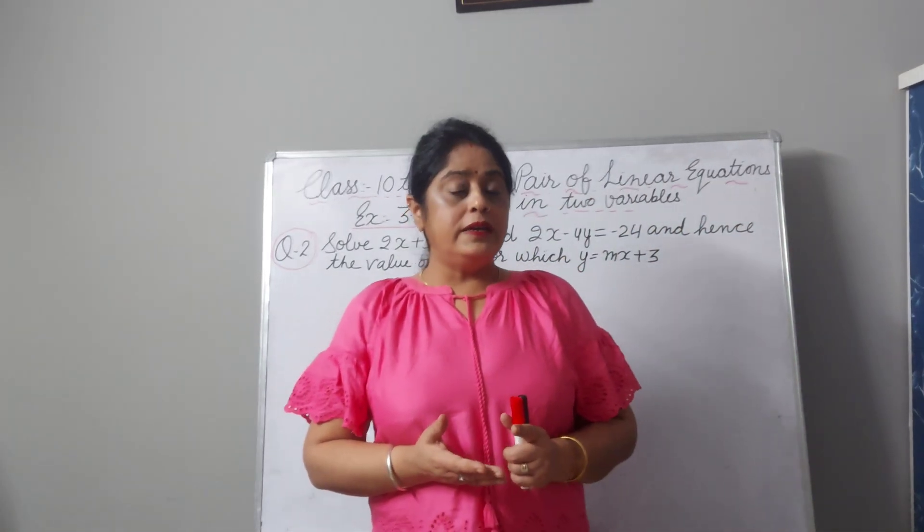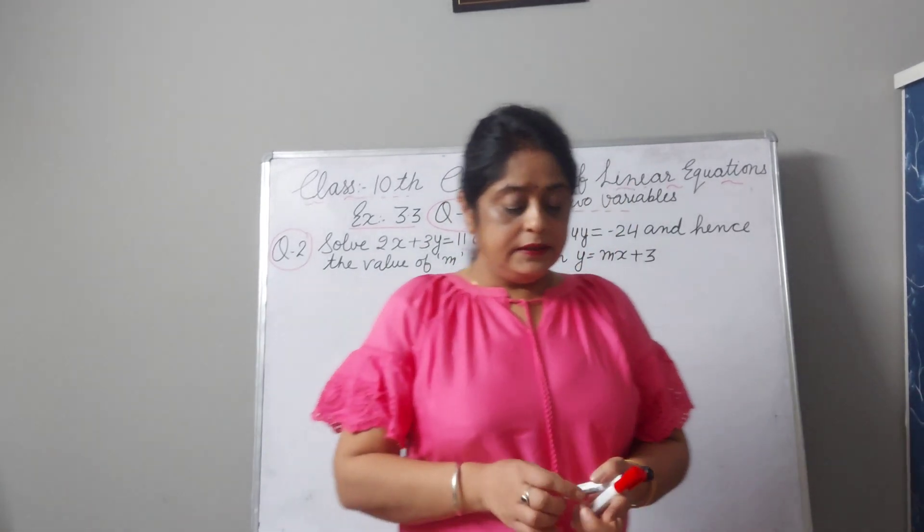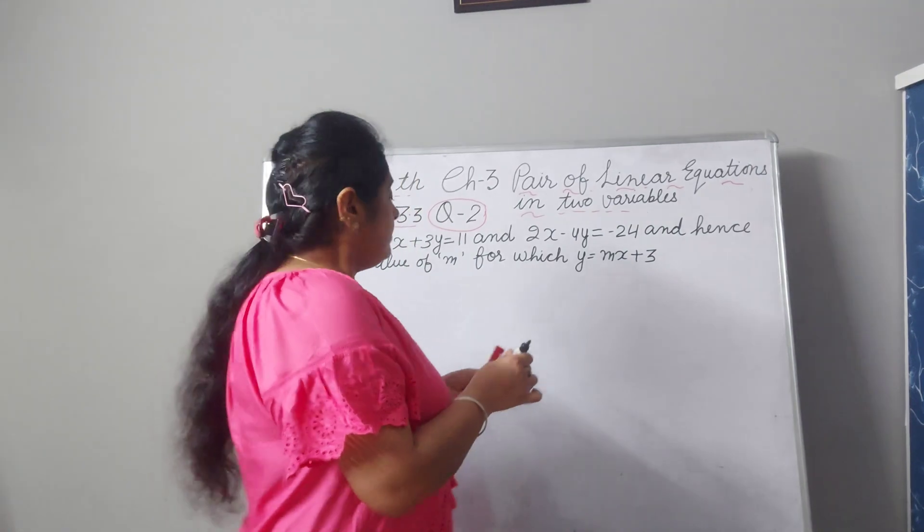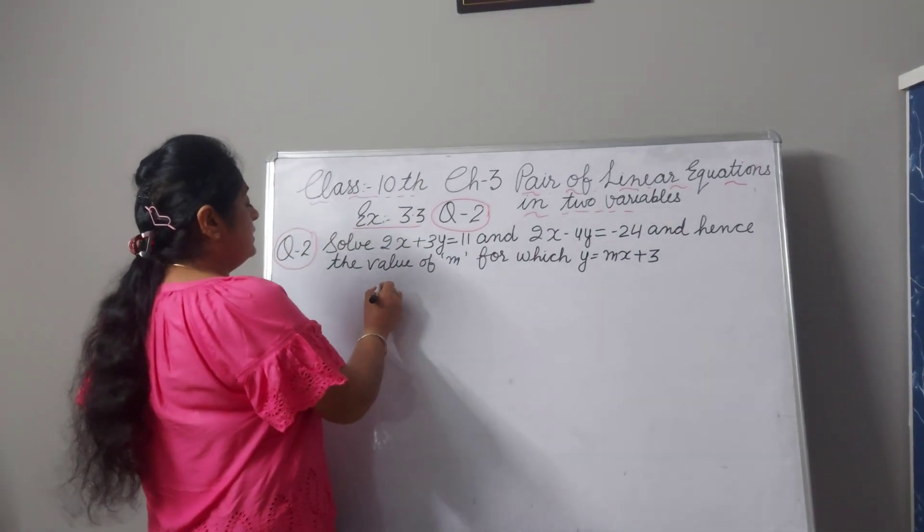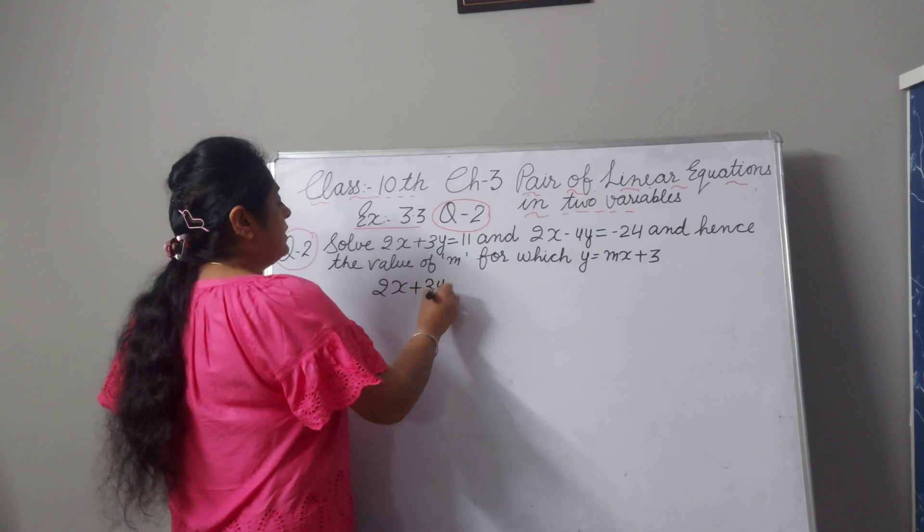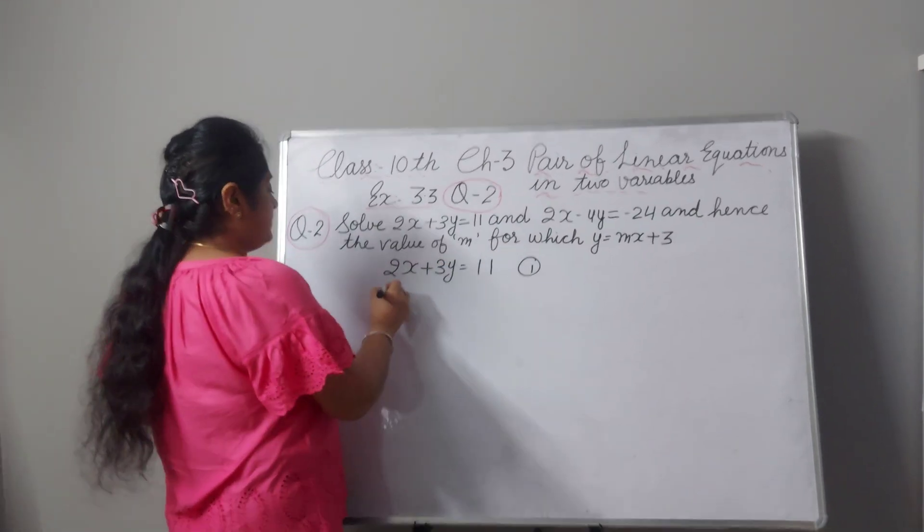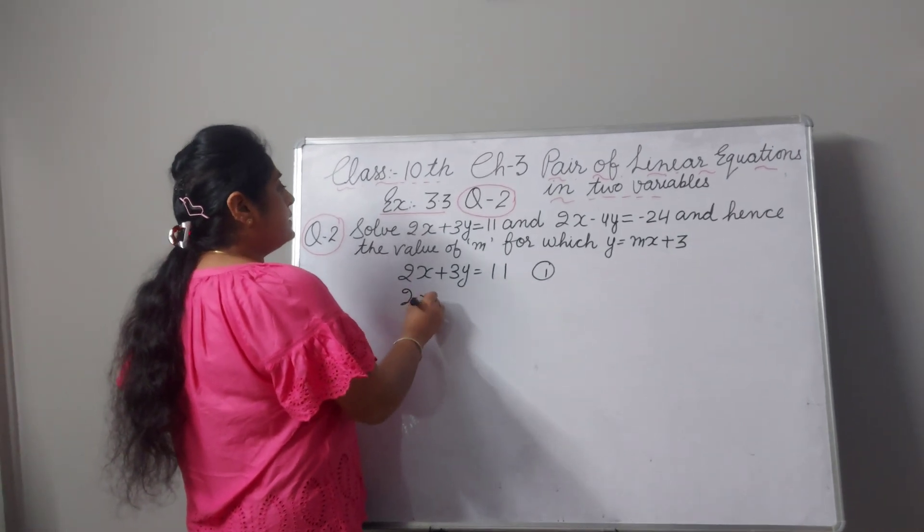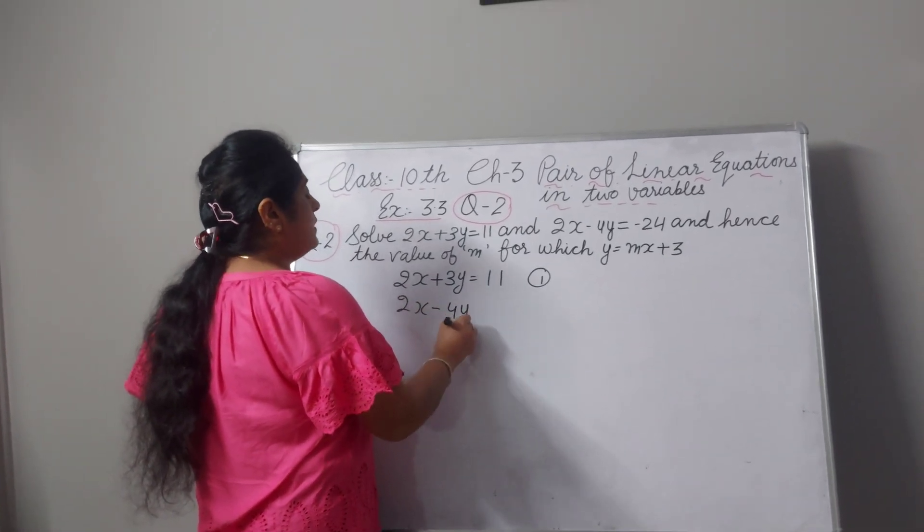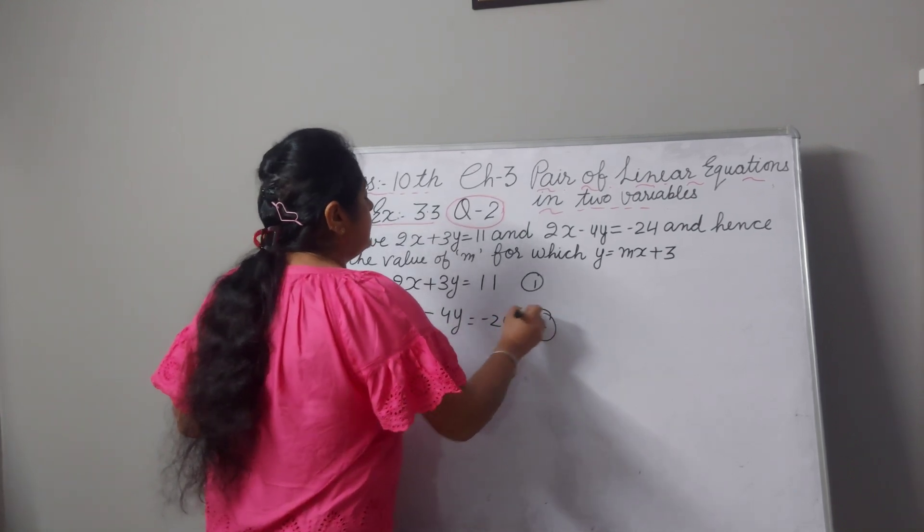First of all, we have to calculate the value of x and y, so now we can use substitute method. First equation is 2x plus 3y equal to 11. This is our first equation. 2x minus 4y equal to minus 24. This is our second equation.